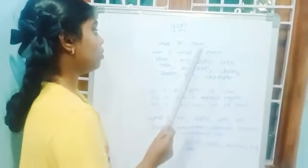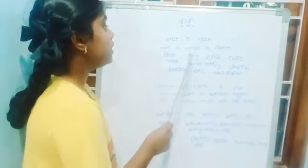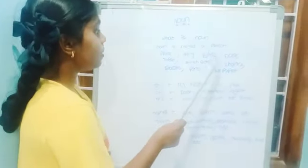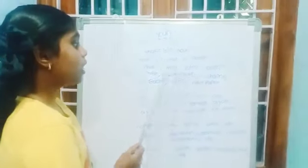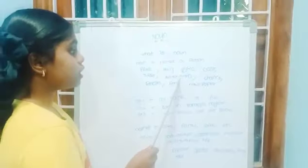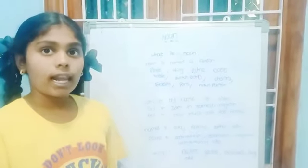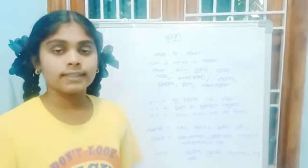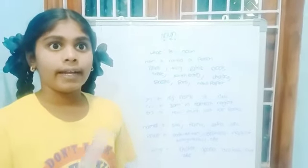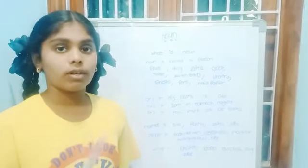What is Noun? Noun means named a person, place, things like door, table, switchboard, chairs, books, pens, newspaper. Noun is nothing but names — naming words like things and naming words.